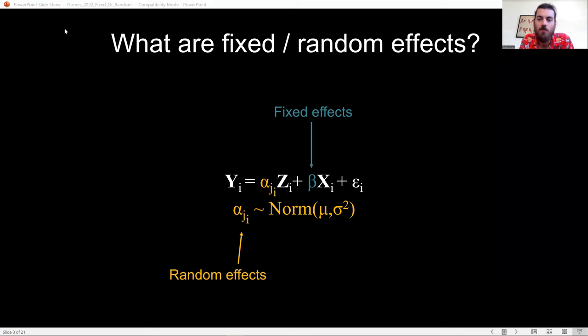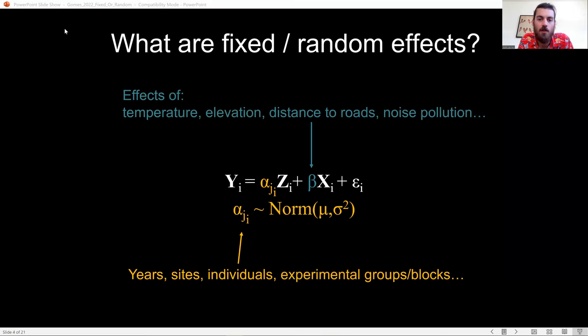Random effects are drawn from a theoretical population of effects, which is alpha here. And there's a lot out there on making this choice.